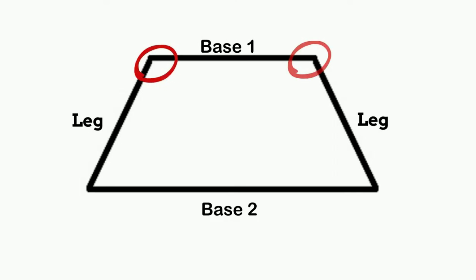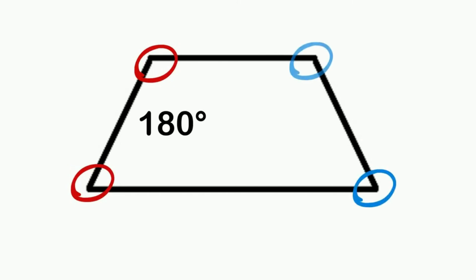The sum of the interior angles of a trapezoid equals 360 degrees. The angles on each side are supplementary, which means they add up to 180 degrees.